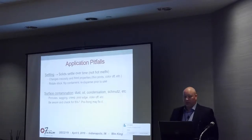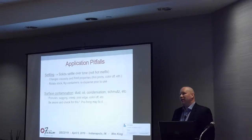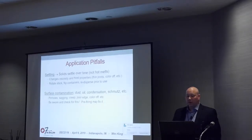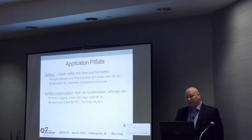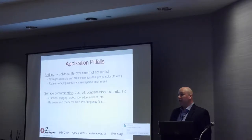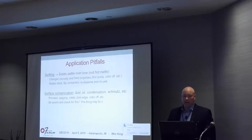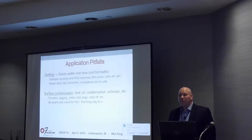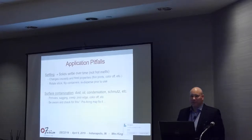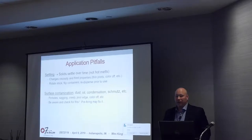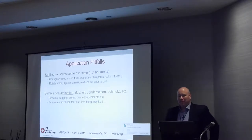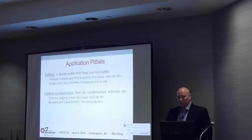Surface contamination or surface energies is another issue. Ceramic or glass enamels tend to be less susceptible to problems than organic coatings when it comes to certain types of surface contamination, because you're burning them off at high temperature. But dust, oil, cold-end coatings from manufacturing, and contamination from storage and handling can still get on there—'schmutz' is a very scientific term that means stuff we haven't defined but that still causes trouble. Surface contamination can lead to pinholes, sagging, screwed-up prints, and creep. Be aware and check for contamination; pre-firing may fix the problem depending on what the contamination is.